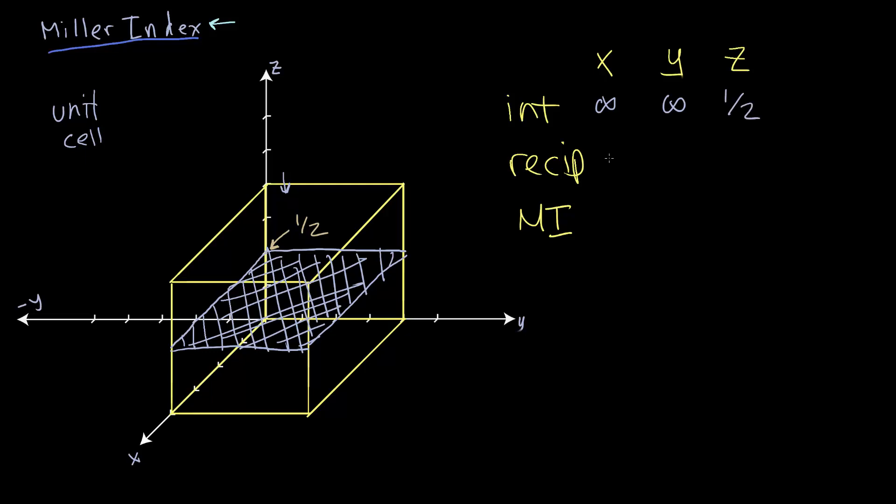At 1 half. So we can take reciprocals again and get 0, 0, and 2.